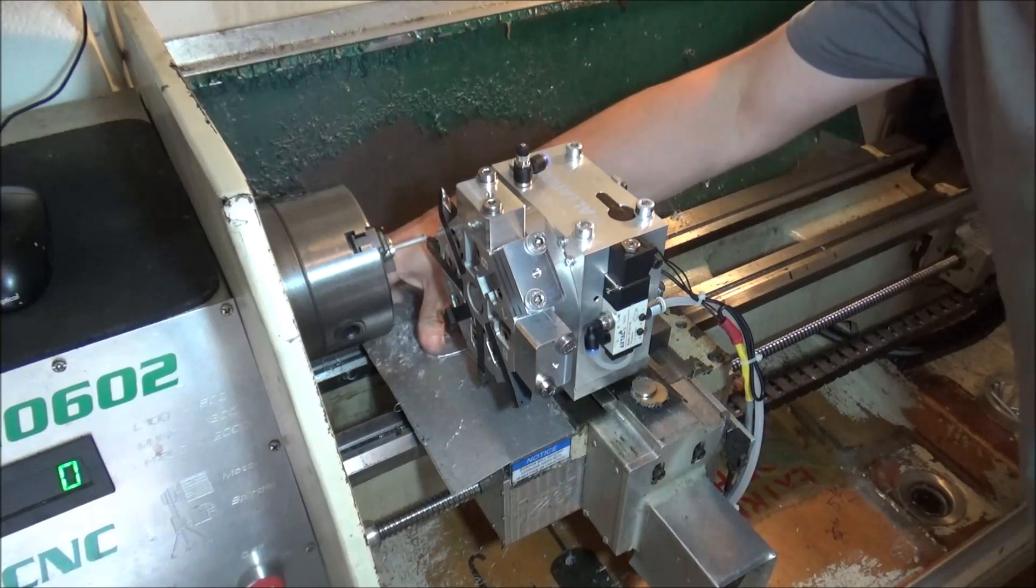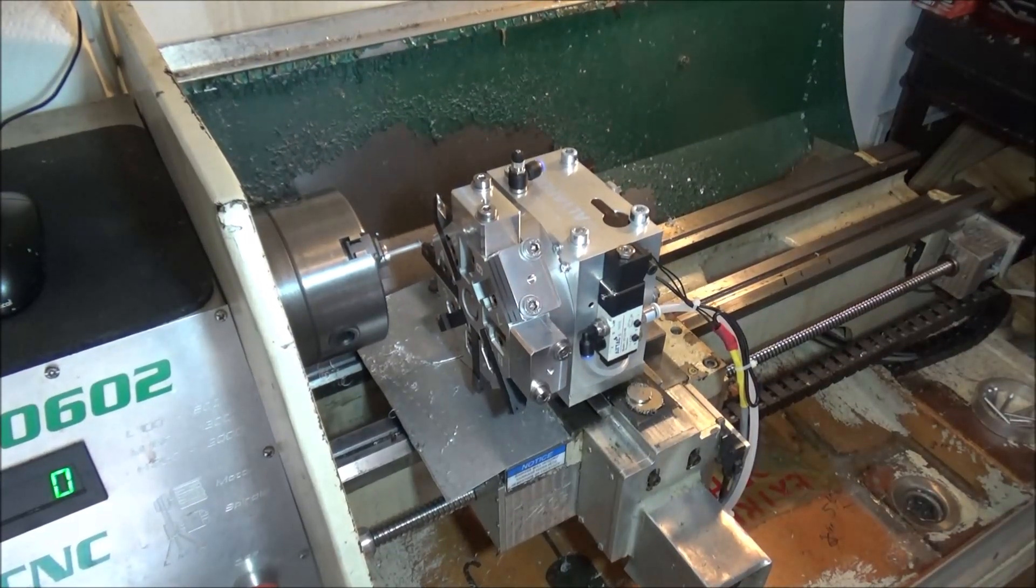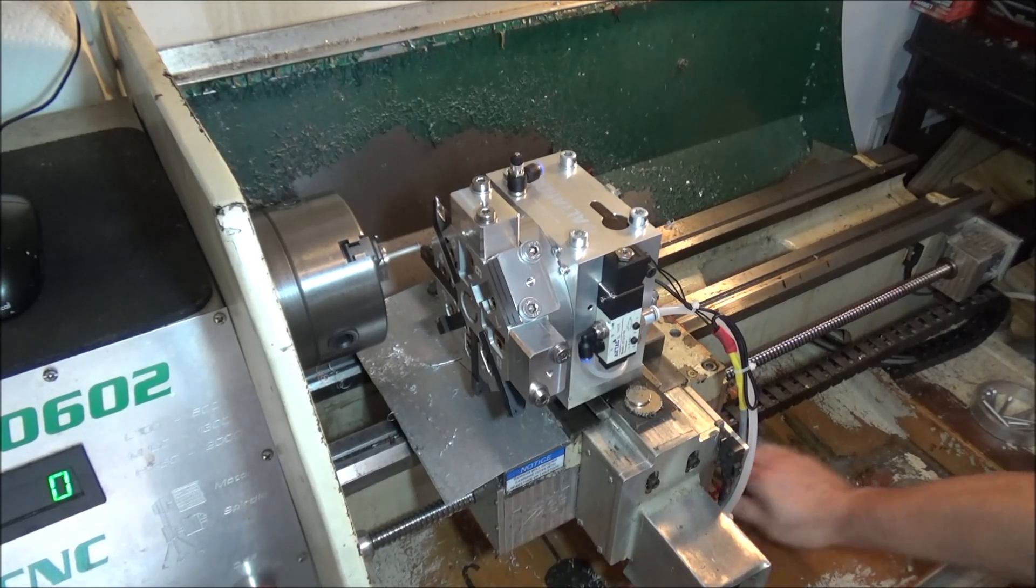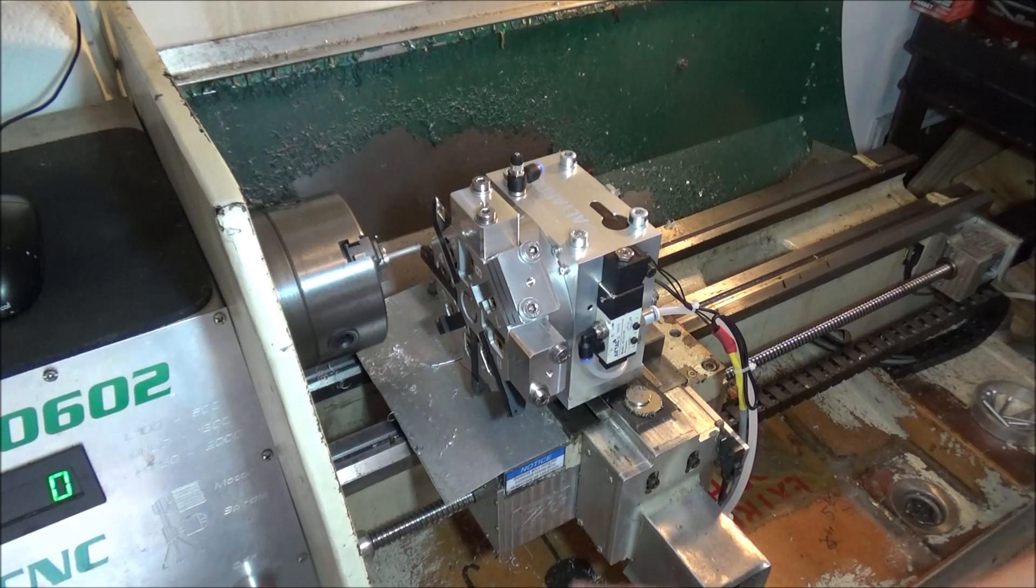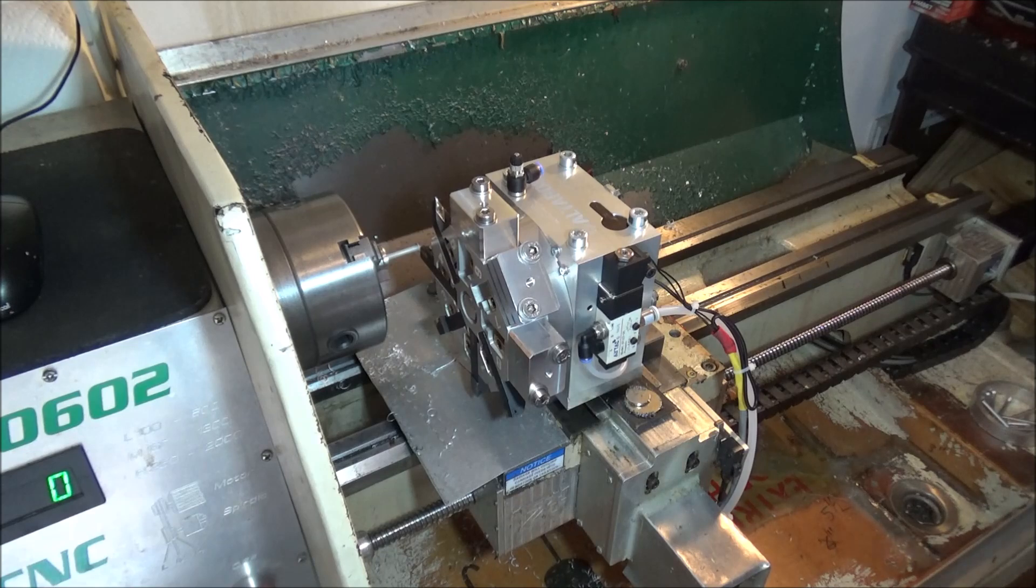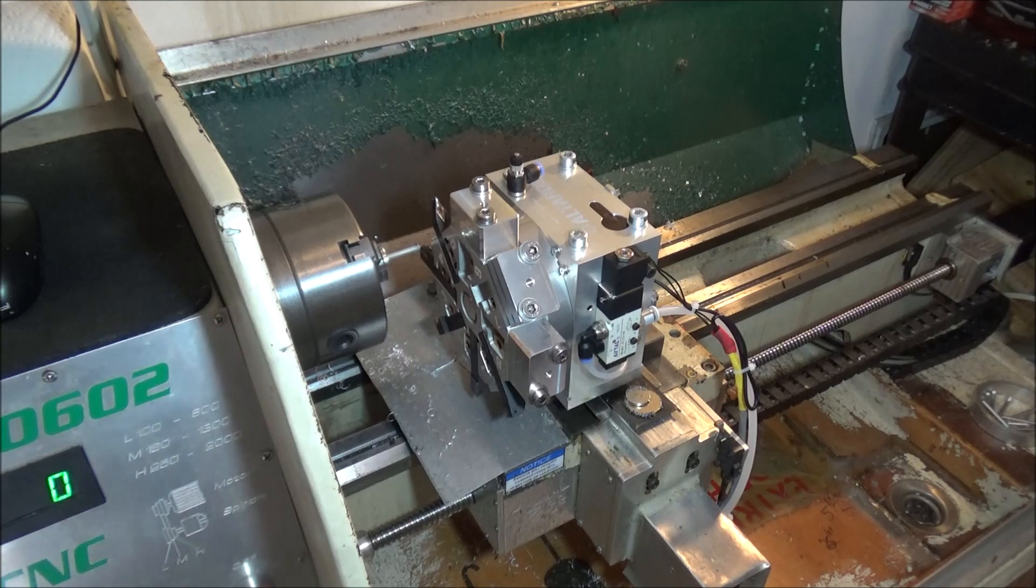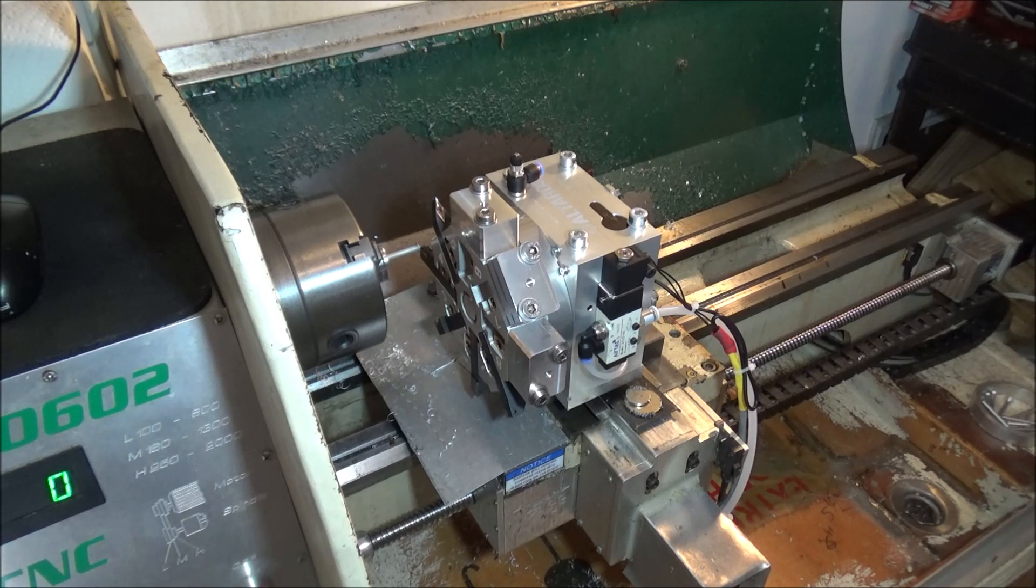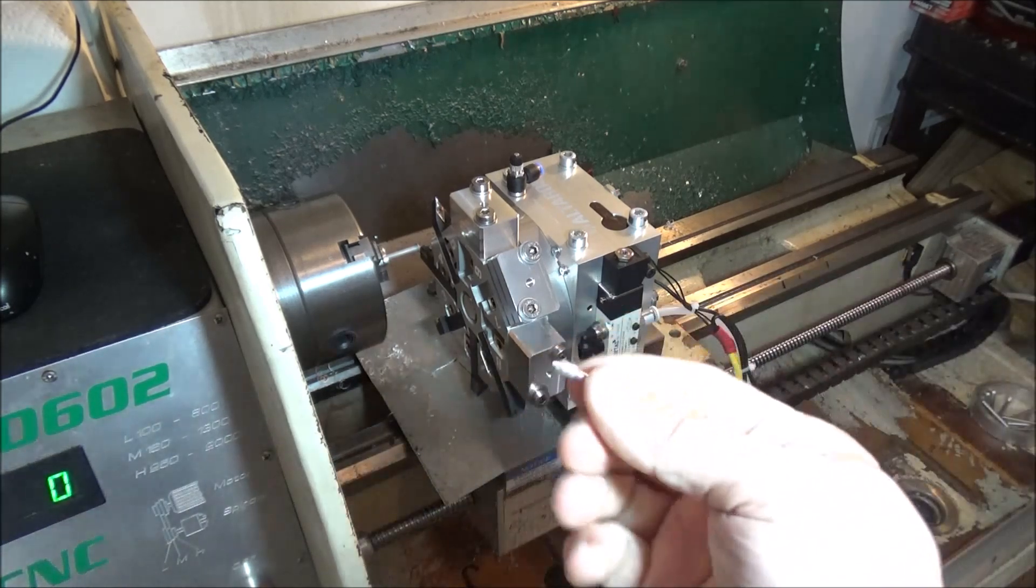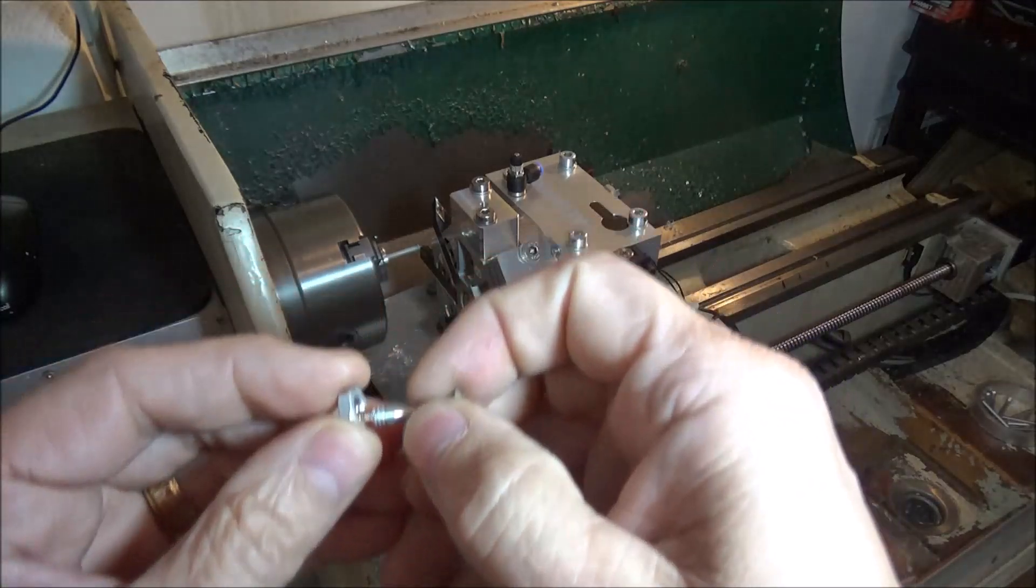That part takes a minute and 27 seconds. You can see that if you're doing a bunch of these, having to change those tools every few seconds there gets time-consuming. So it's nice to be able to have the turret do all the work. Now all I have to do is just change the stock every minute and 27 seconds.